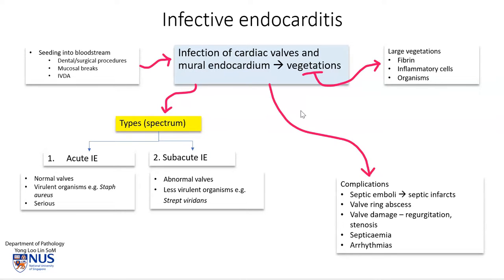Complications of infective endocarditis include vegetations that can shoot off into the bloodstream and land in distant sites such as the brain or the spleen. Because they carry organisms, this can give rise to septic infarcts. There may be a valve ring abscess if the infection penetrates the valve, as seen earlier in the microscopic slide. There may eventually be valve damage, regurgitation, stenosis, and septicemia.